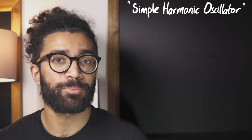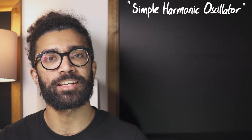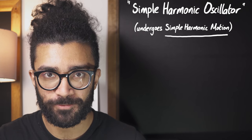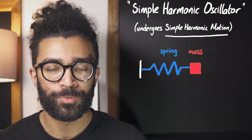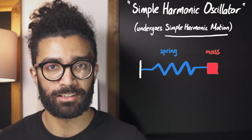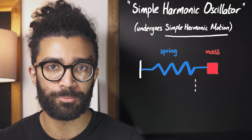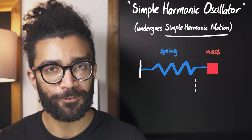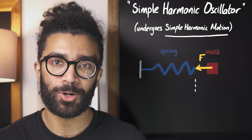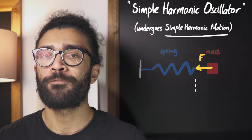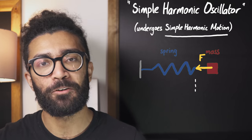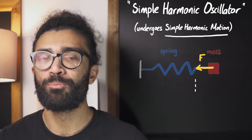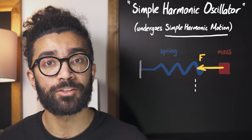Let's imagine we're looking at a simple harmonic oscillator. This is basically anything that undergoes a particular kind of motion known as simple harmonic motion. For example, we could set up a mass and a spring like this. When we pull the mass in a particular direction away from its natural or equilibrium position, the spring will exert a force on that mass, trying to return the whole system back to its natural position. Now the force that this spring exerts is directly proportional to how far we move the mass away from its natural position. The more we move the mass away, the larger the force.